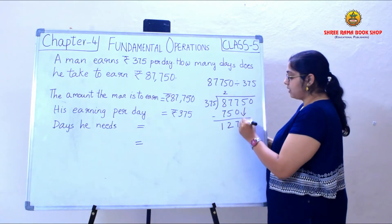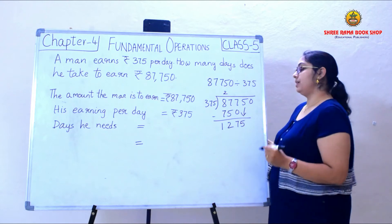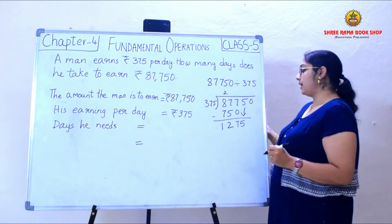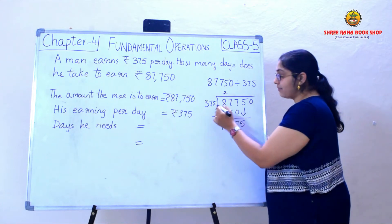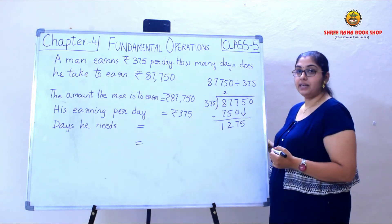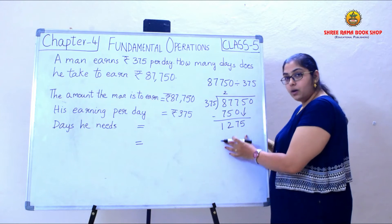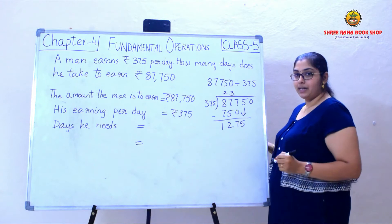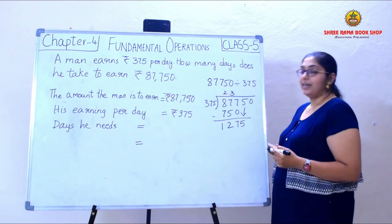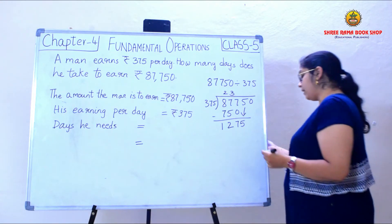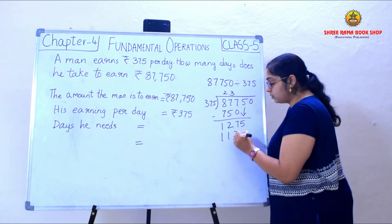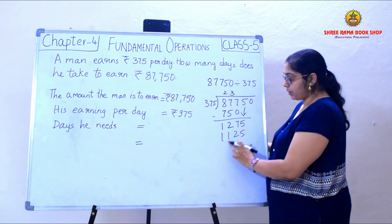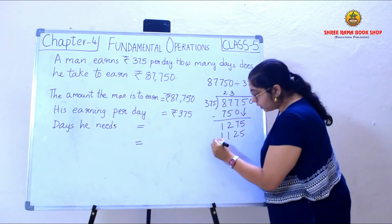I bring the next digit down. The new number is 1,275. I need to check how many times 375 goes into 1,275. 375 times 3 is 1,125. So I subtract: 5 minus 5 is 0, and continue.